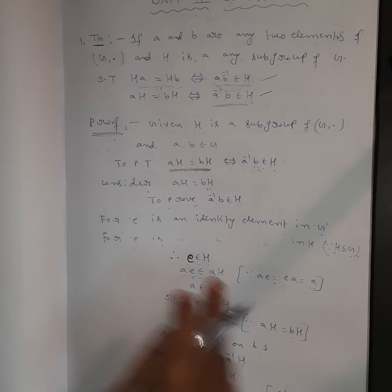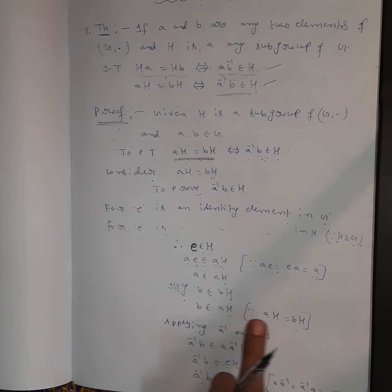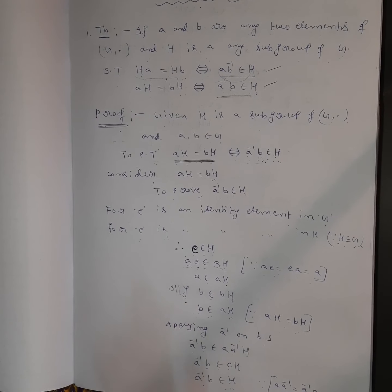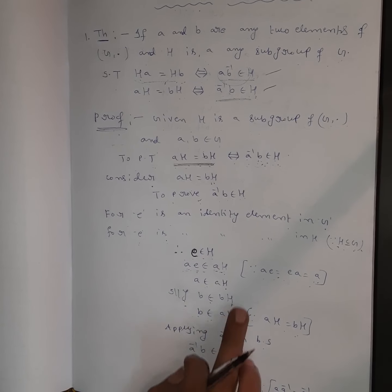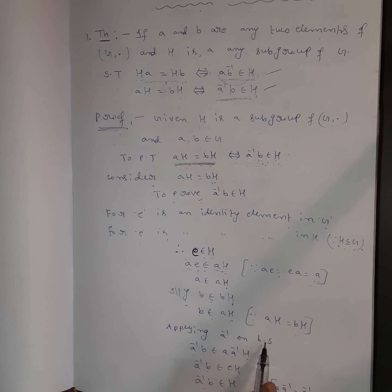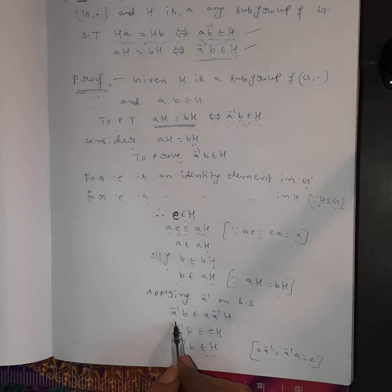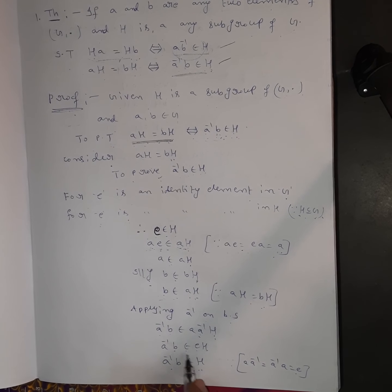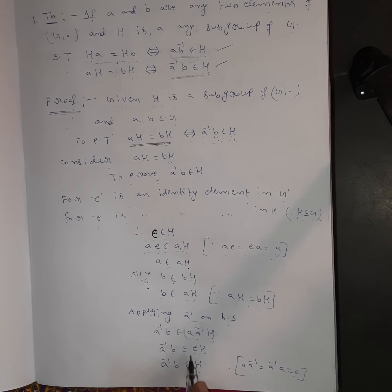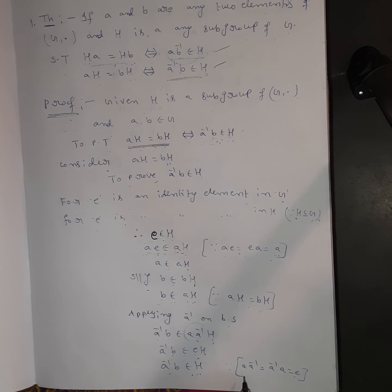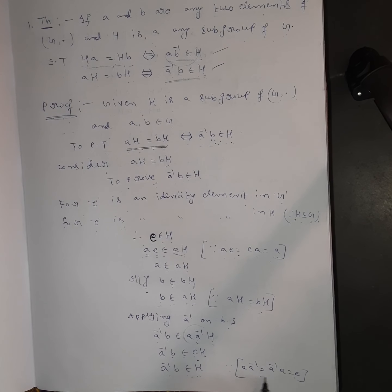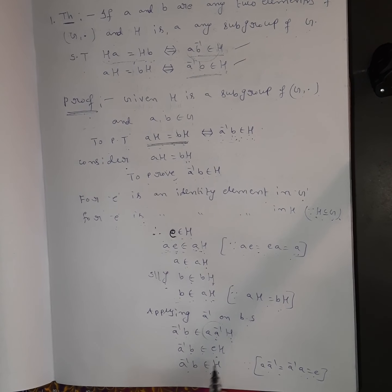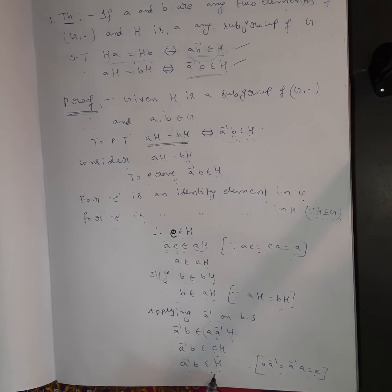Since AH equals BH, B belongs to AH. Applying A⁻¹ on both sides, A⁻¹B belongs to A⁻¹H. Since A times A⁻¹ equals A⁻¹ times A equals E, we get A⁻¹B belongs to EH, therefore A⁻¹B belongs to H.